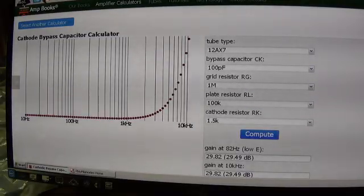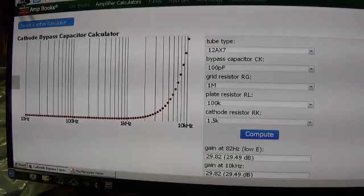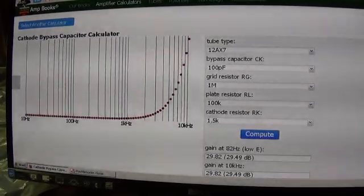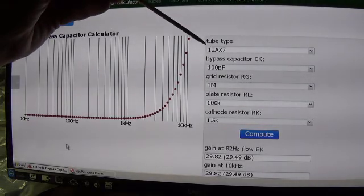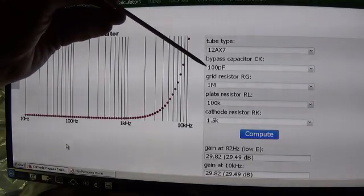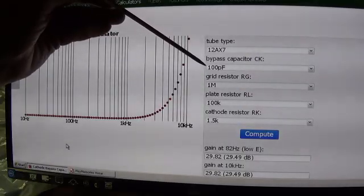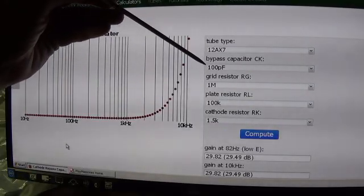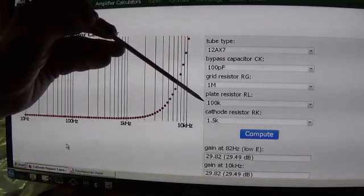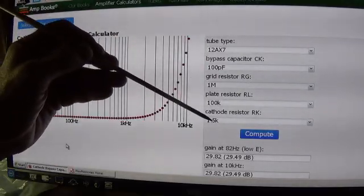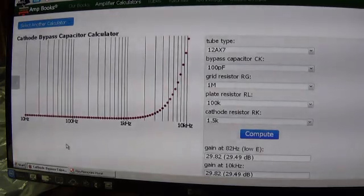Now we're looking at the AmpBooks amplifier calculator for cathode bypass capacitors. I'm going to put a link to this site in the description of the video so that you can go there and try this for yourself. I've got it set up for the 12AX7, which is by far the most common preamp tube. They don't offer a zero bypass capacitor or no bypass capacitor, so this is their lowest value. This will show us what the system looks like when you really don't have a cathode bypass cap. Grid resistor is 1 meg, plate resistor is 100k, cathode resistor is 1.5k. These are very typical values. Virtually all Fender amps use 1.5k on their cathode resistors for the 12AX7s.